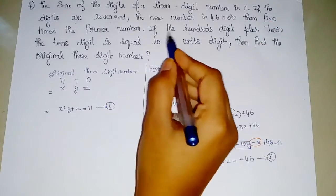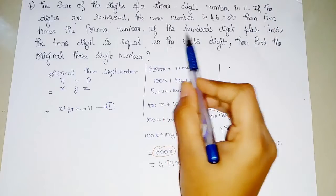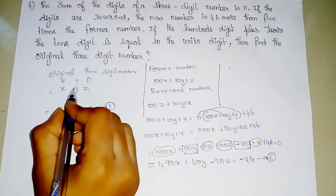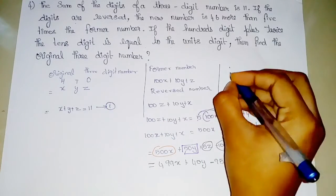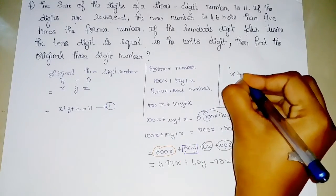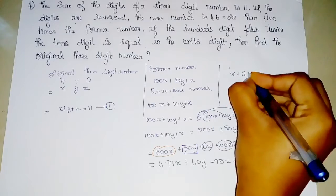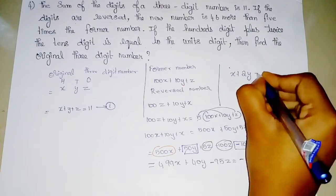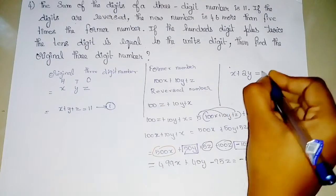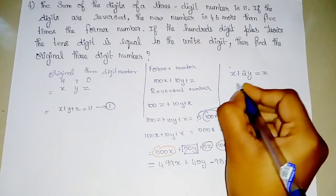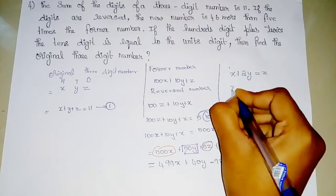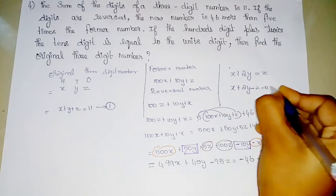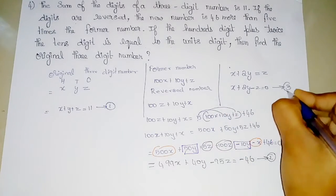From the third condition: the 100th digit plus twice the 10th digit is equal to the unit digit. So X plus 2Y equals Z, which means X plus 2Y minus Z is equal to 0. This is Equation number 3.